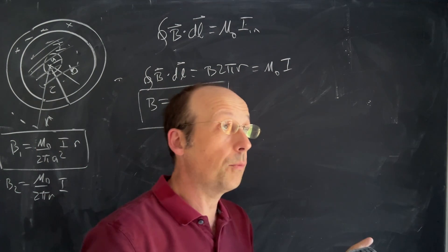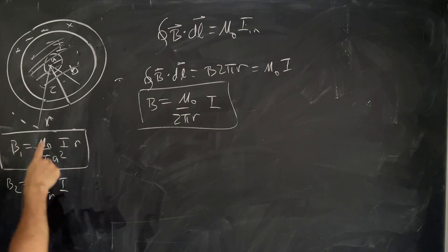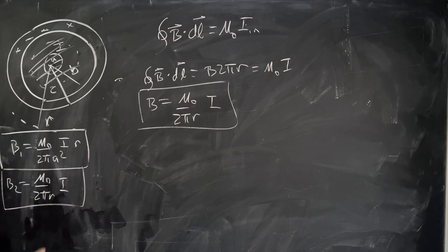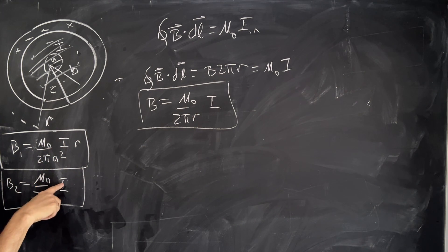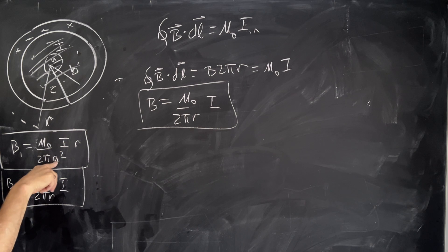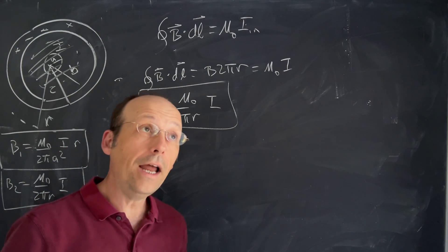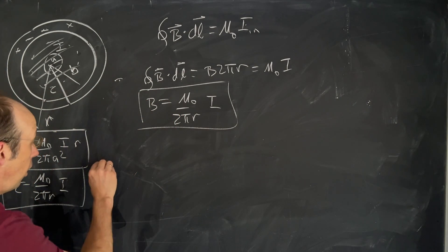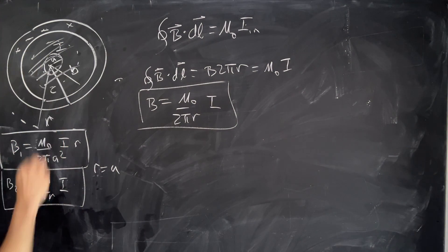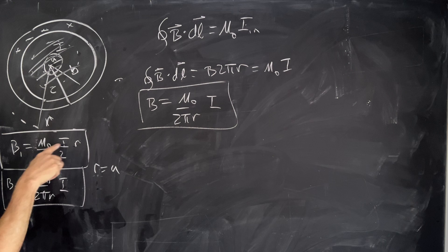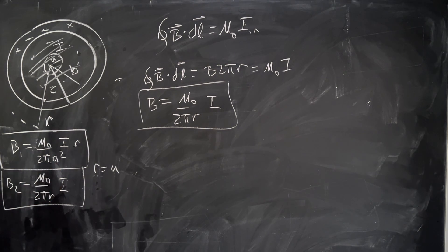Now one of the things that we didn't check. Number one, did the units work? Do these two fields have the same units? Well, here I have μ₀IR/a². Here I have μ₀I/R. Notice I have meters over meters squared. So they do have the same units. Number two, what if R equals a? Which one do you use right on the border? Well, if I put in a right here, I get μ₀I/(2πa). If I put a here, I get the same thing. So they agree. That's good.